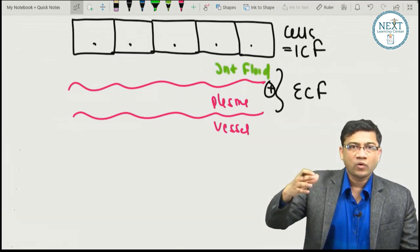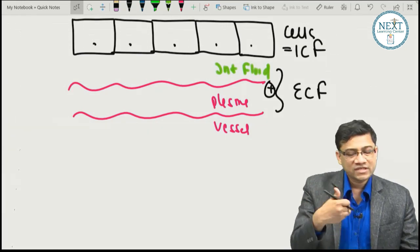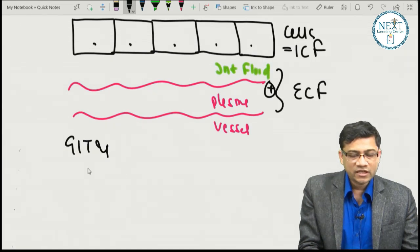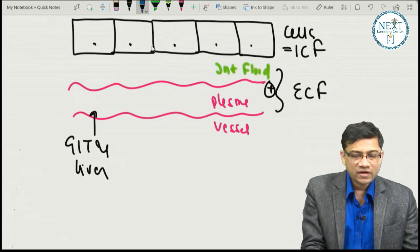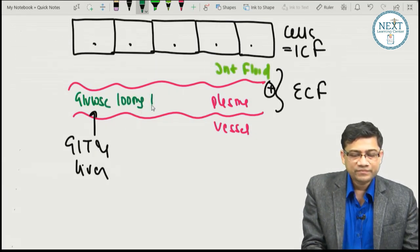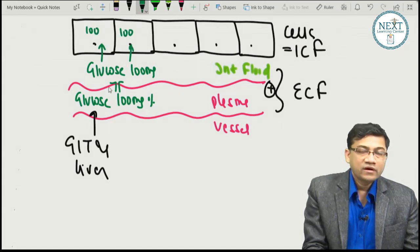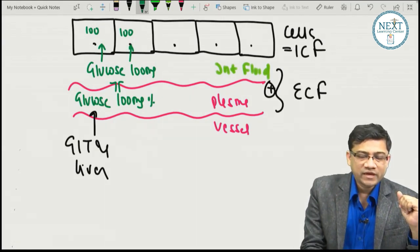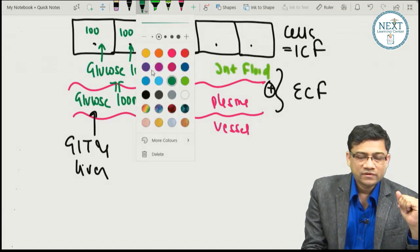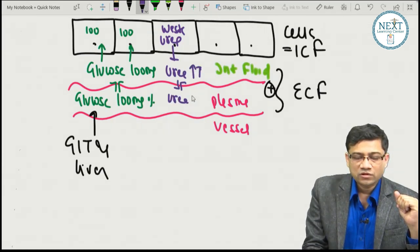Just like a fish in a pond gets food and excretes waste into the water, cells get everything from the interstitial fluid and throw all waste into it. For example, the GIT and liver give glucose (say 100 mg%) to the plasma. Since plasma and interstitium have the same values, the interstitium also has 100 mg% glucose, and all cells can get it via GLUT transporters. Metabolic waste like urea enters the interstitial fluid and then the plasma.